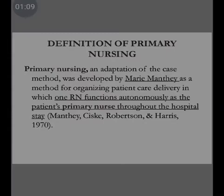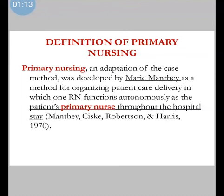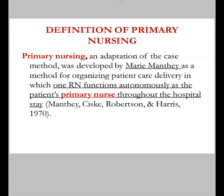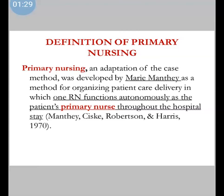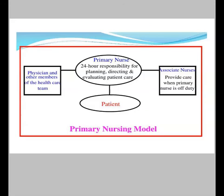In this method, one RN functions autonomously as the patient's primary nurse. This registered nurse is the primary nurse, and she is taking care of the patient throughout the hospital stay. That particular primary nurse is accountable and responsible for each and everything about the patient. This is the primary nursing model.